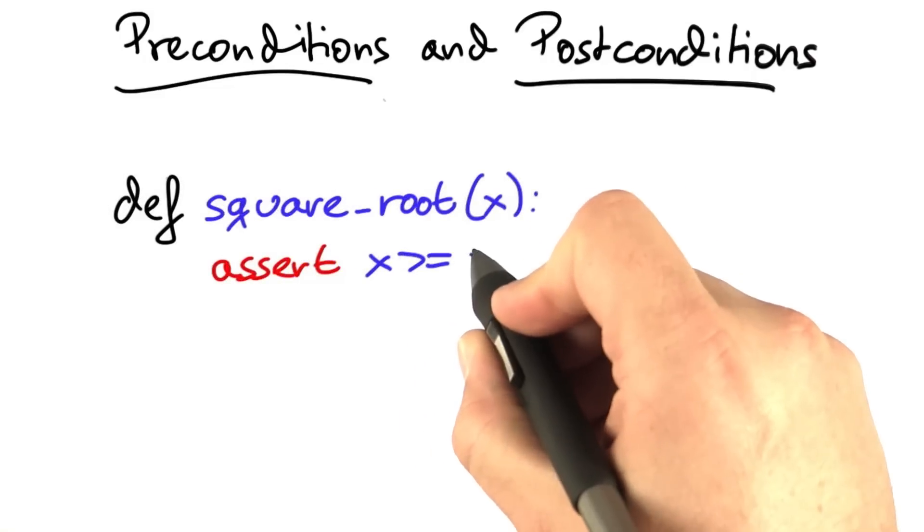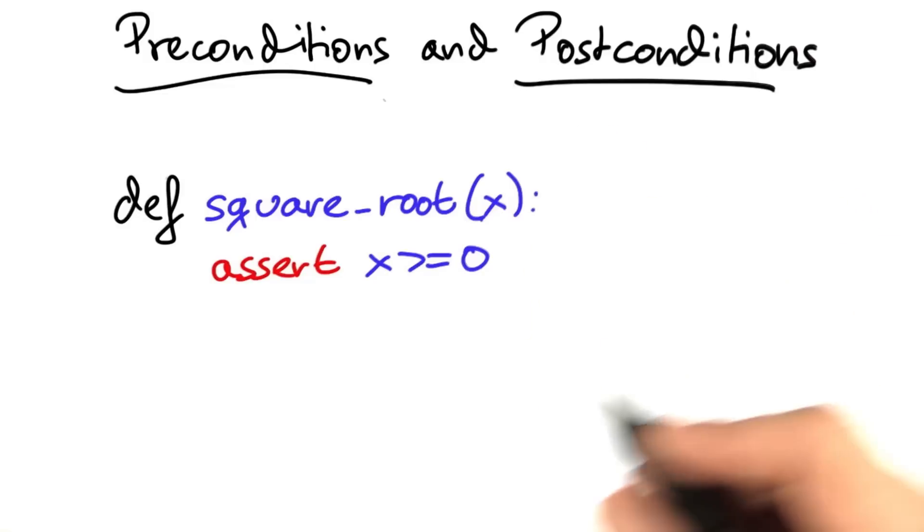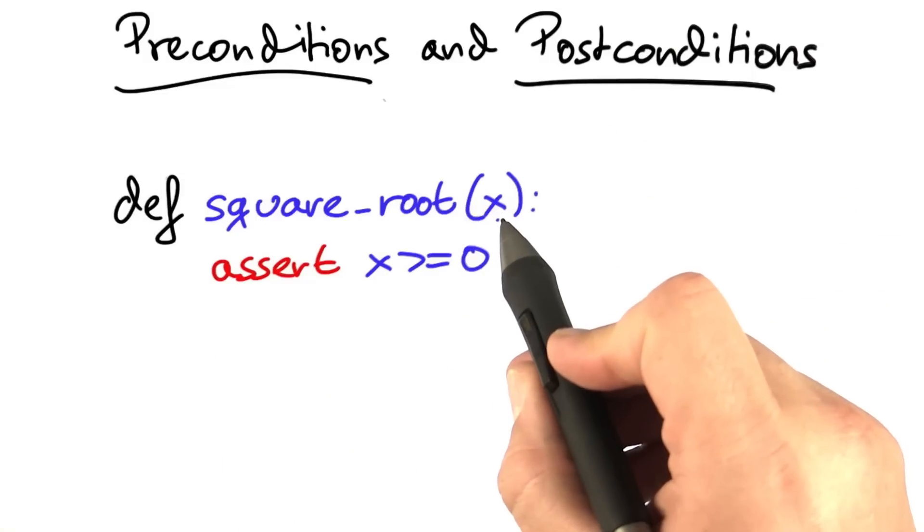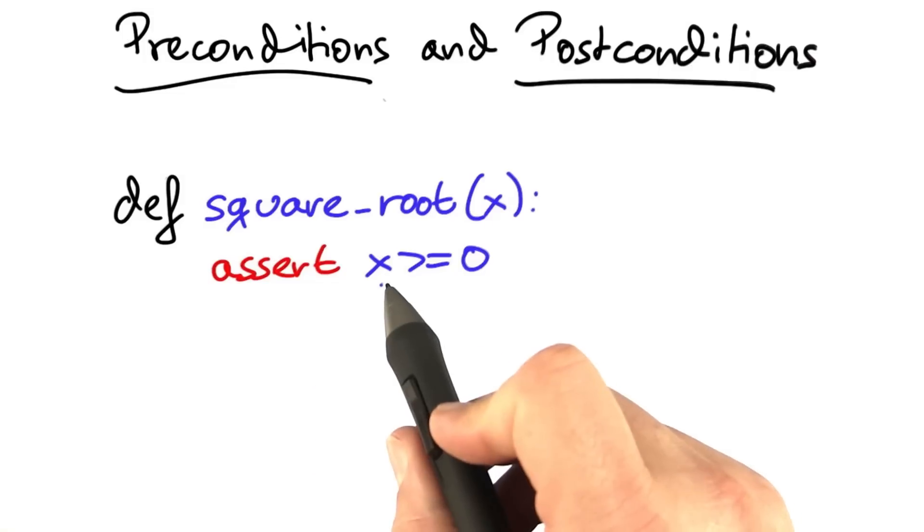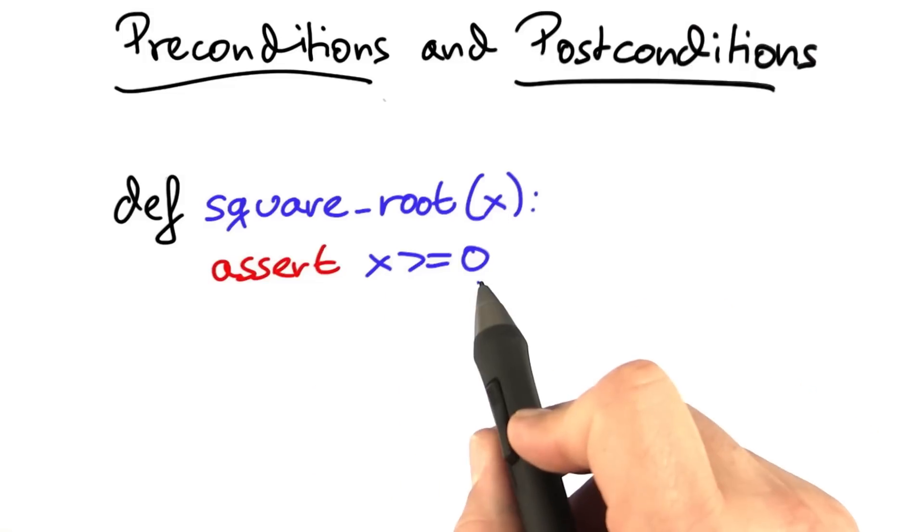A classic example for the use of assertions is a square root program. In the beginning, when invoking square root, we want to make sure that x, the parameter, is non-negative.